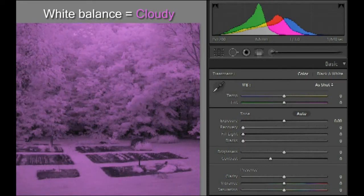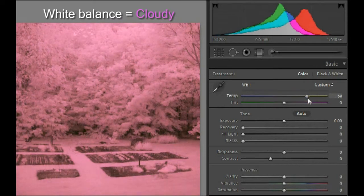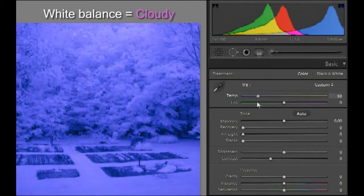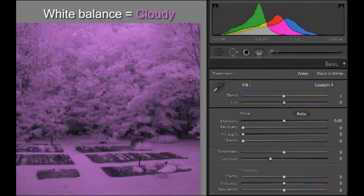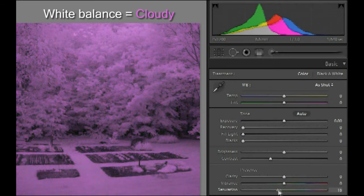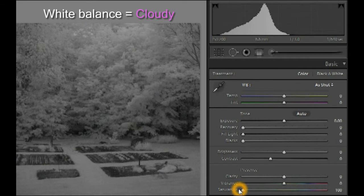Starting with a photo that was pinkish because a custom white balance was not done — the temperature slider does not allow you to remove all the color as a custom white balance does. It's easy to replicate the effect by desaturating the image. It's probably not possible to know which channels or which white balancing procedure will produce the most correct NDVI values, but either doing a custom white balance beforehand or taking the average of the three channels might be the most consistent protocol.